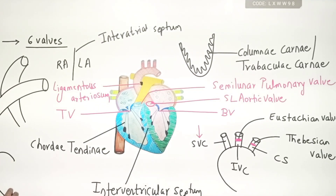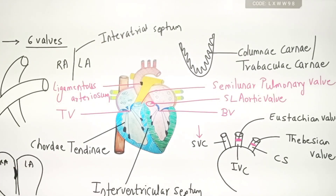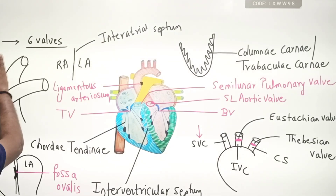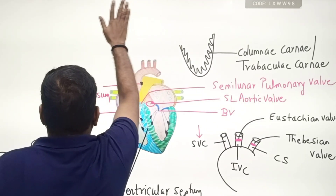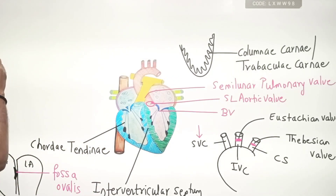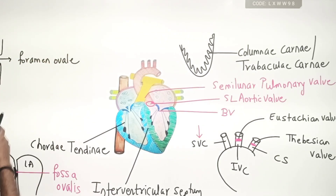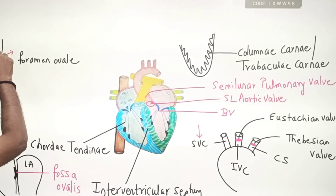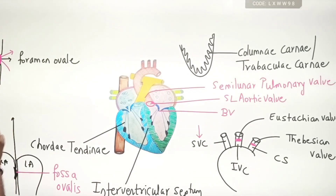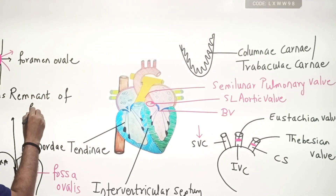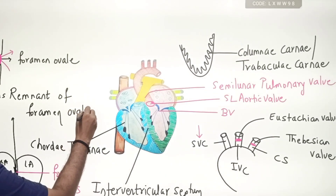Between the right atria and left atria there is a depression called the fossa ovalis. To understand what fossa ovalis is: when the baby is in the womb of the mother, there is always a gap between the right atria and left atria called the foramen ovale. This foramen ovale in the womb allows mixing of oxygenated and deoxygenated blood. But once the baby is born, this opening closes and a depression-like mark forms — that depression is called fossa ovalis. So fossa ovalis is the remnant of the foramen ovale.